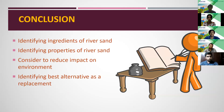In conclusion: we identified the ingredients and properties of river sand, considered ways to reduce environmental impact, and identified quarry dust as the best alternative as a replacement for river sand. That's the end of our presentation. Thank you.